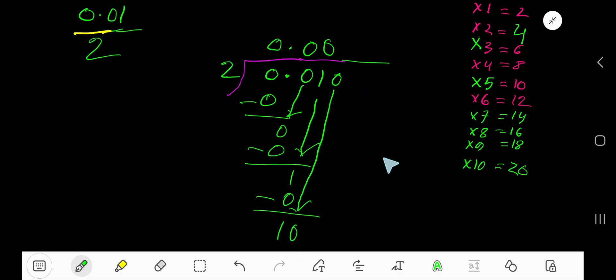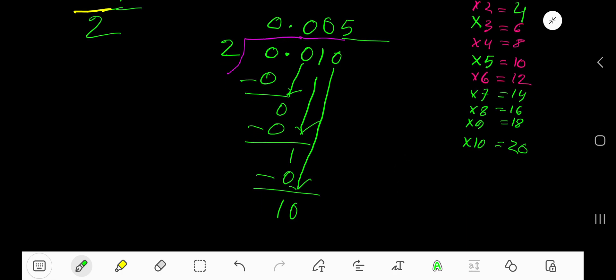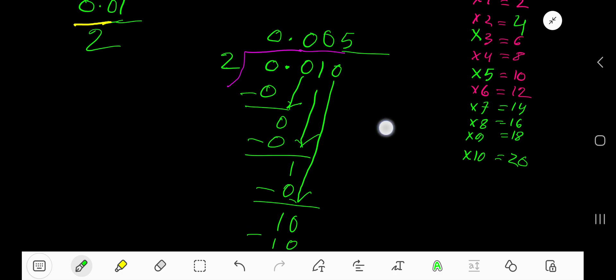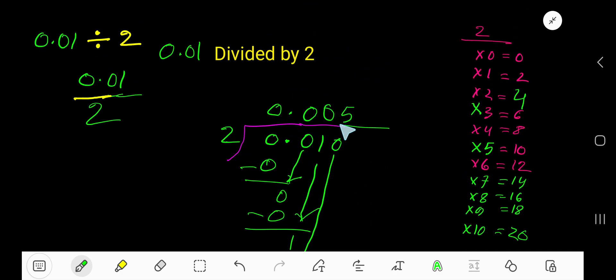2 goes into 10 how many times? Look, 2 times 5 is 10, so 5 times. Write 5 here. 5 times 2 is 10. If you subtract, you are getting 0. The answer is 0.005.